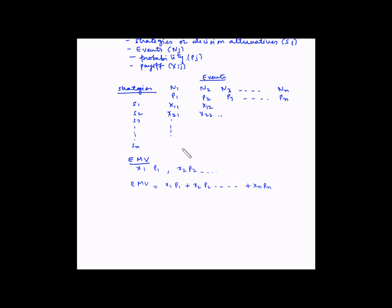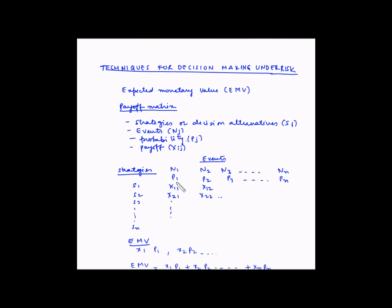So in the payoff matrix that we created earlier, the EMV for strategy S1 will be equal to X1,1 multiplied by P1 plus X1,2 multiplied by P2 and so on. Similarly, for S2, it will be X2,1 multiplied by P1 plus X2,2 multiplied by P2 and so on.